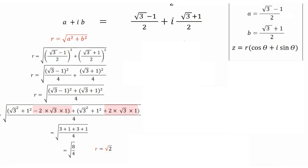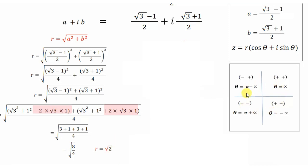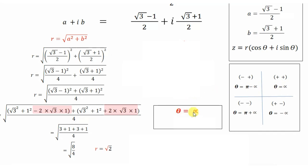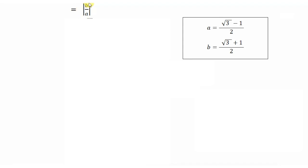Next let us find θ. Since a is positive and b is also positive, the complex number lies in the first quadrant, so θ = α. To find α, we use α = tan⁻¹(b/a). The values of a and b are somewhat large, so let us solve b/a separately.